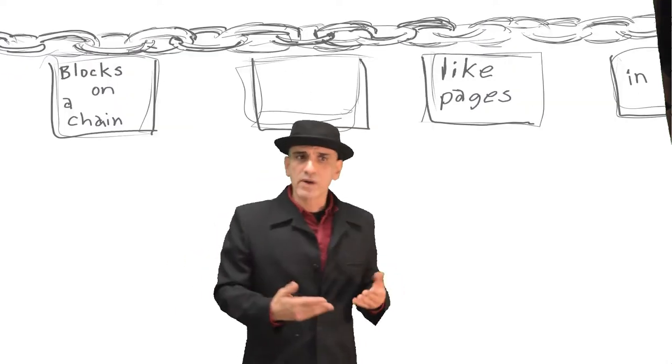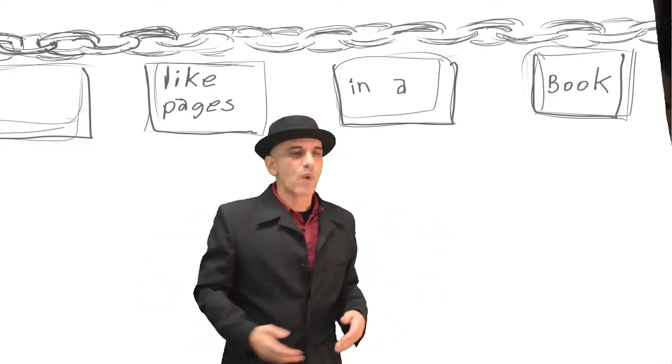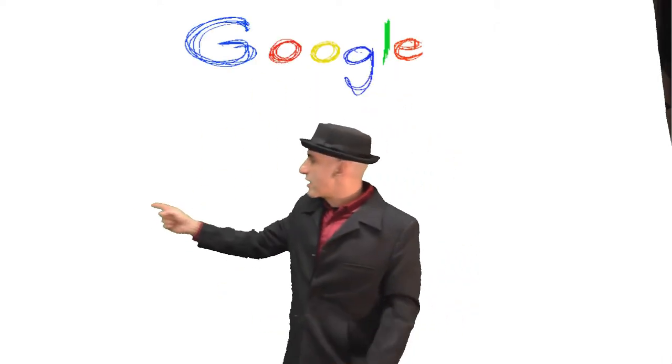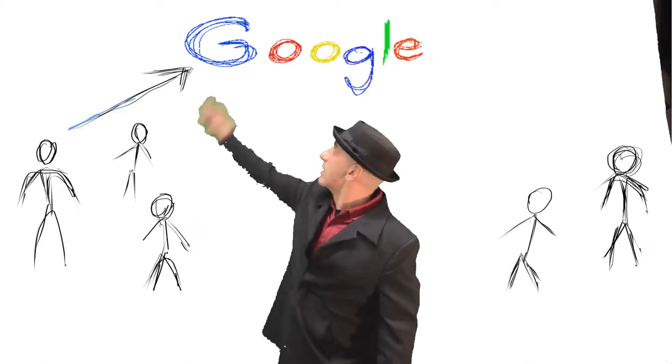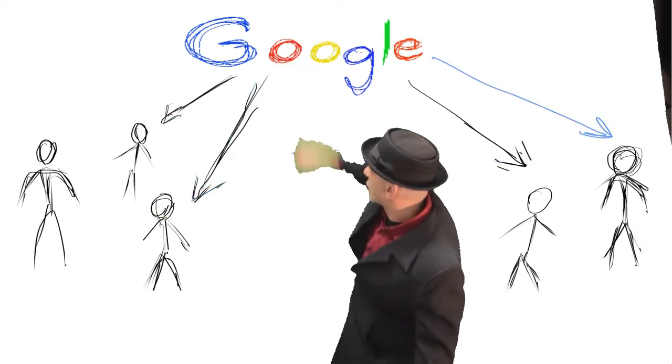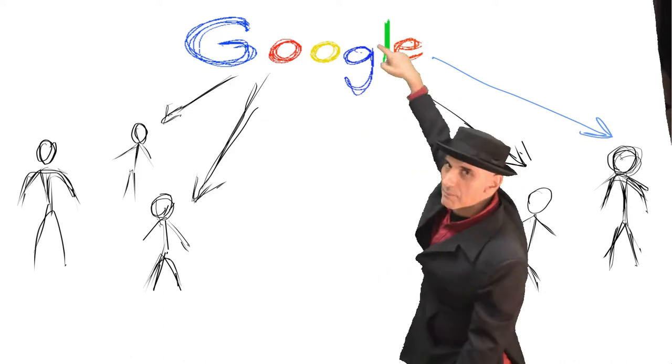You know, this is important and you might want to know why. Well, it's like a Google Doc without Google. So say here's Google, and this person makes a change to the document, they send it up to Google, then everybody else goes to Google and gets their copy.